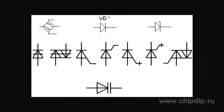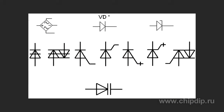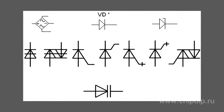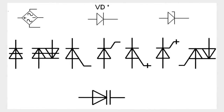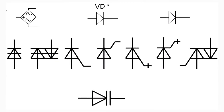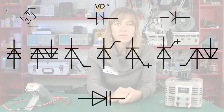For this purpose, position designations are used, including a letter designation of the element type, its design type, and the radio component numerical designation as compulsory parts. Diagrams also additionally use a letter position of a radio component showing the element function.